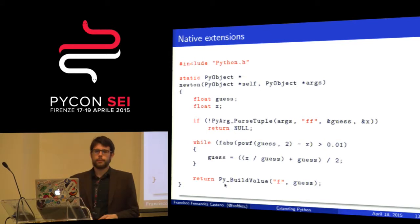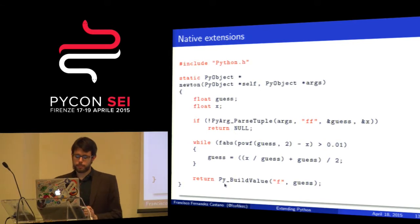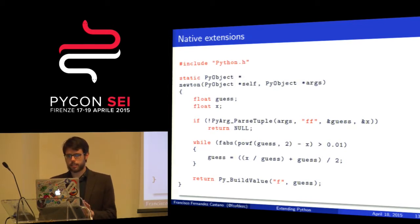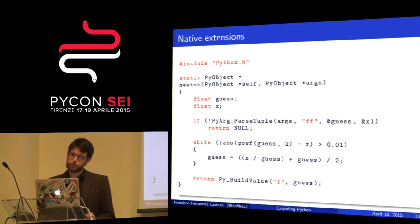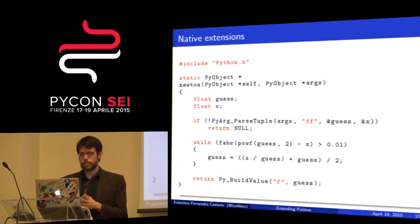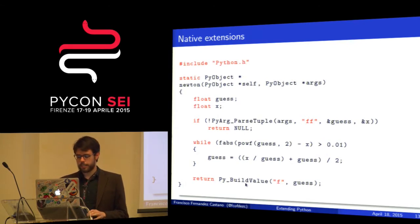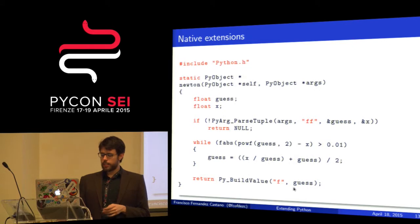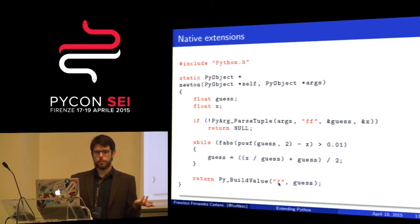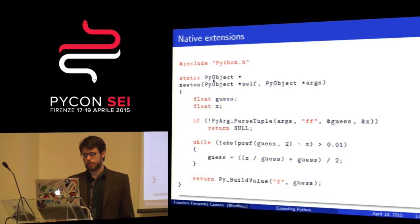I cannot return a raw C float directly to the CPython interpreter; it needs a PyObject because that's what it handles. So I need to build a PyObject. This is a helper function that the CPython API gives us. I'm telling it: given this guess, which is a float, build me a PyObject. So I am returning a pointer to a PyObject.